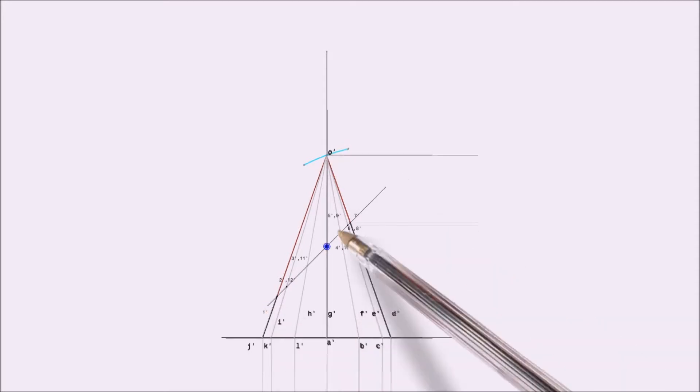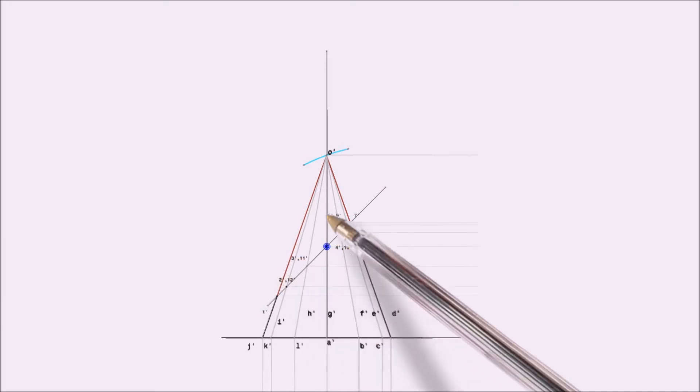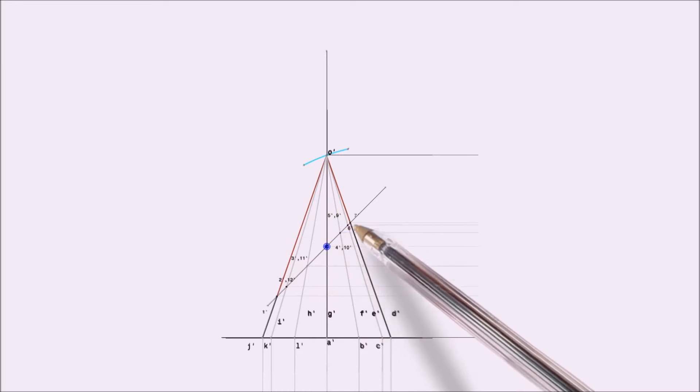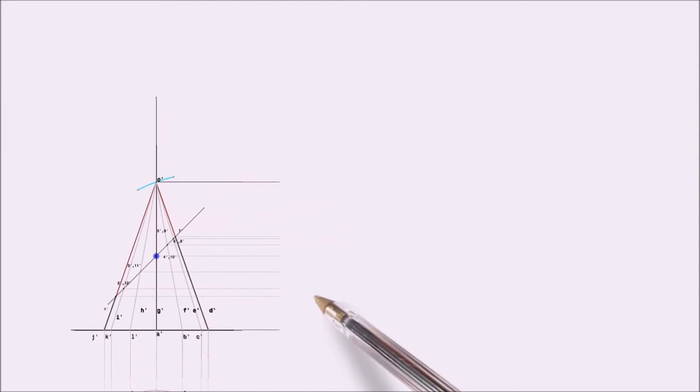Obtain the included angle of the sector. Theta is equal to 20 multiply by 360 and divide by 60 gives theta equal to 120 degrees. Then draw sector OD with OA as center and included angle 120 degrees.